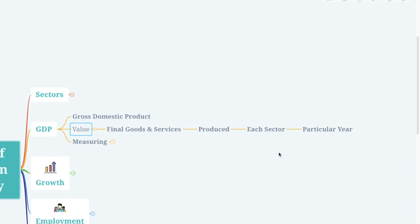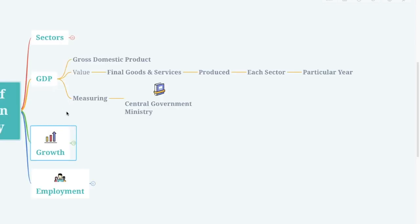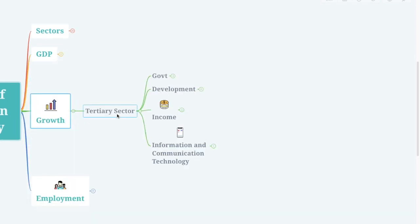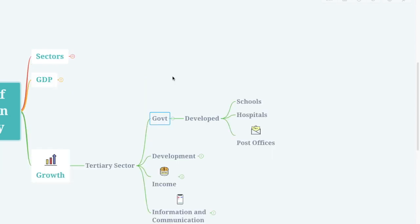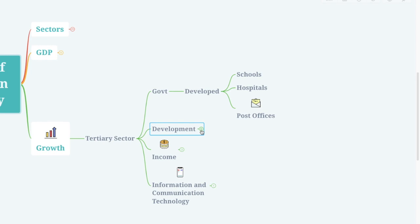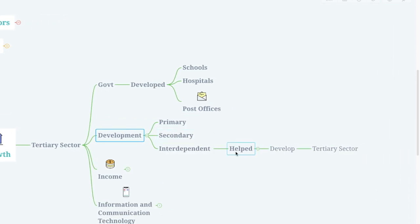The task of measuring the GDP lies with the central government ministry. Day by day the tertiary sector is becoming more and more important. The reason for the growth of the tertiary sector is that the government has invested lots of money into schools, hospitals, and post offices.